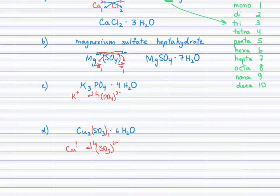K3PO4, dot, 4H2O. We'll have the potassium ion and the phosphate ion. And so this is potassium phosphate, and now the prefix for 4 is tetra, and so we have tetrahydrate.